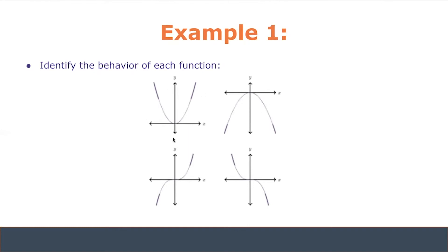With the second graph, it's essentially the inverse. As x values go from negative infinity towards zero, the y values go from negative infinity towards zero, so they're increasing. On the range where x values approach positive infinity, the y values are decreasing towards negative infinity. The graph arc opens downwards, making it concave down.